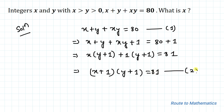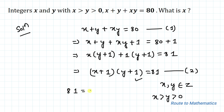Now, since x and y are both integers greater than 0, they are positive integers. In order to satisfy equation 2, the values of x plus 1 and y plus 1 must be factors of 81. The factors of 81 greater than 0 are: 1, 3, 9, 27, and 81.